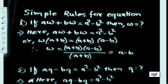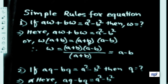To find the value of w, we apply the rule. Here, a·w plus b·w equals a squared minus b squared. w is taken common from both terms, giving w times (a plus b) on the left side. On the right side, a squared minus b squared is expanded using the algebraic formula as (a plus b)(a minus b).